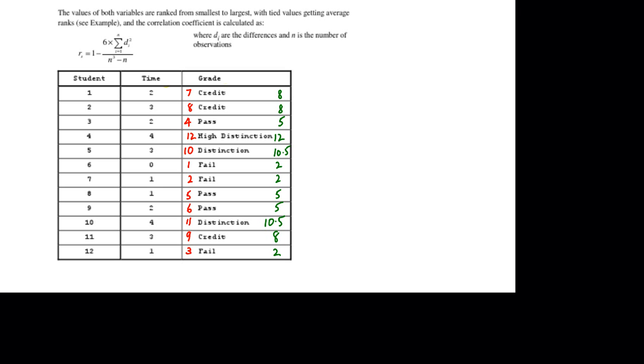Over here, I've worked the same procedure through for the grades. Starting with the fails, which start with ranks 1, 2 and 3, but get ranks 2, the average. And continuing through to create ranks for all of the grades.